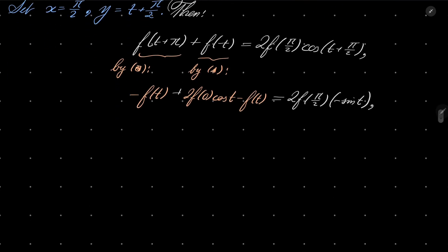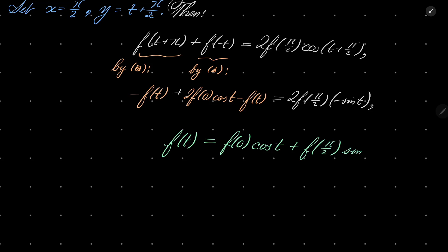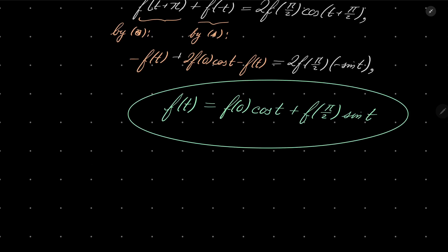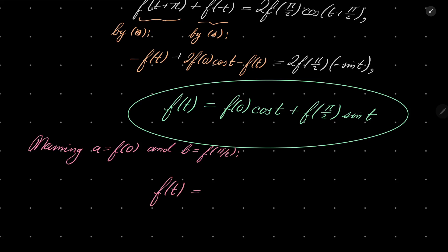After some shuffling, dividing and so on, you will get that f(t) = f(0)·cos(t) + f(π/2)·sin(t). What is f(0)? What is f(π/2)? Well, they are just some constants. Naming a = f(0) and b = f(π/2), we have: f(t) = a·cos(t) + b·sin(t).